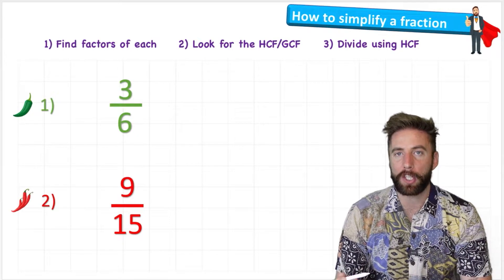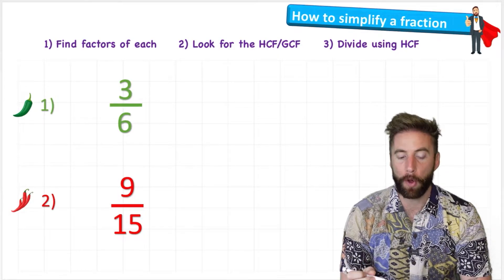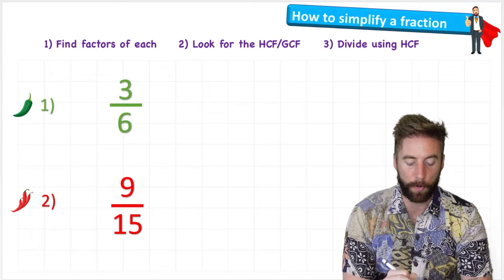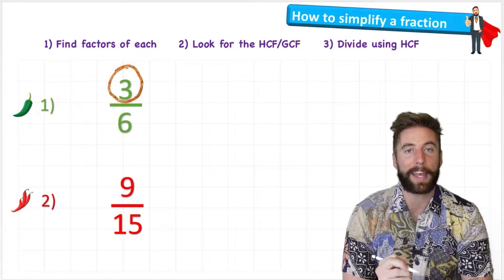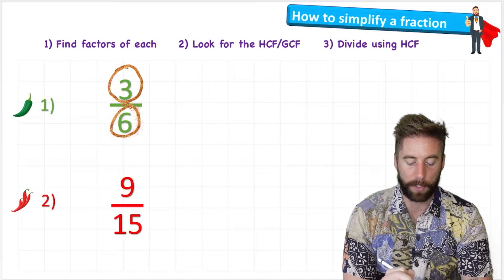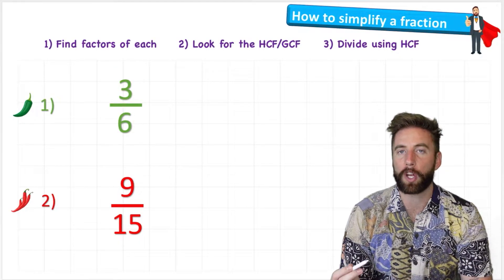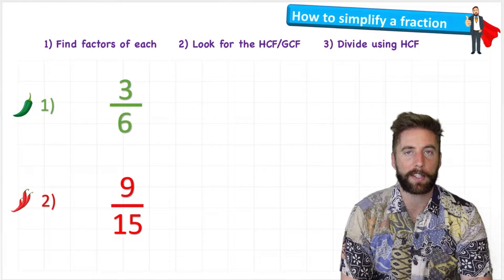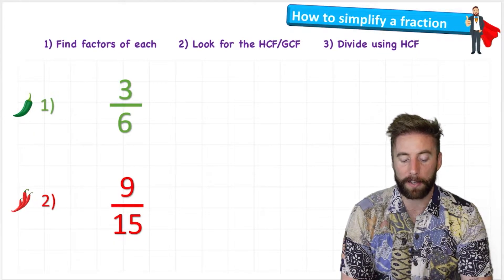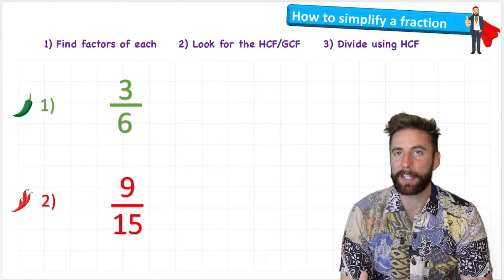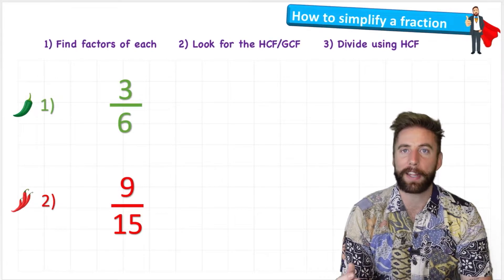First step says we're going to find factors of each, and each means both the numbers in our fraction - the numerator, this top number, and the denominator, our bottom number. Then step two says we're going to look for the highest common factors or the greatest common factor. And then we're going to divide our existing numerator and denominator by this highest common factor.